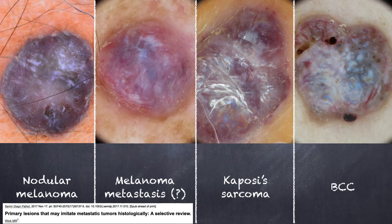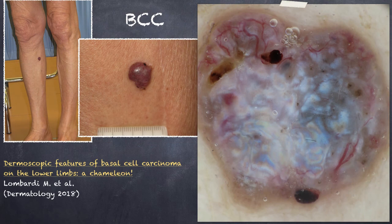The other two cases were nodular melanoma and melanoma metastasis — because those lesions were solitary, displayed no features specific for basal cell carcinoma, and were located on the back, a common site for melanoma. When there are no recognizable features for common tumors, always think about melanoma. Also remember that basal cell carcinoma on the legs is a chameleon: its features may not be classical, as in a case showing predominantly white color.